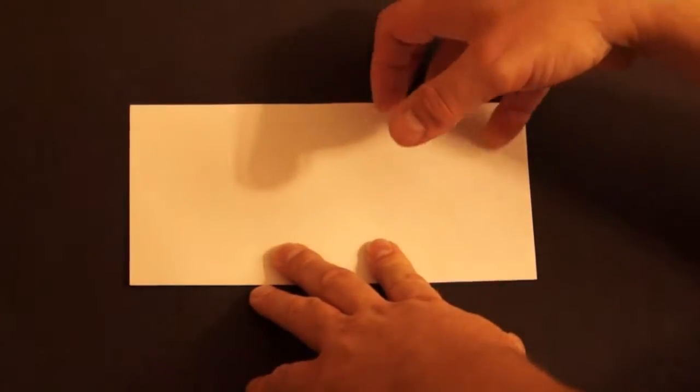Next we open it up. Turn it so the crease is vertical. And fold the bottom to the top.